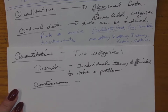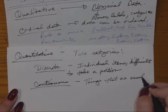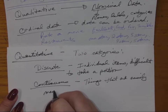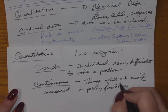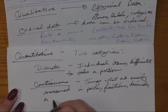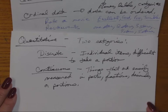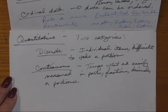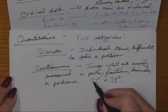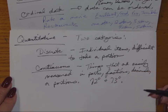Continuous data is something that can be measured in parts, portions, fractions, or decimals that are easily measured. For instance, the temperature in the room could be 72.9 degrees — there are values between 72 and 73 degrees if the thermometer is sensitive enough. Similarly, somebody's height doesn't have to be exactly five feet or six feet; I can say five foot five, or even measure to half an inch.